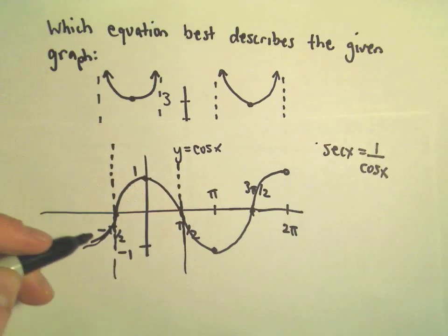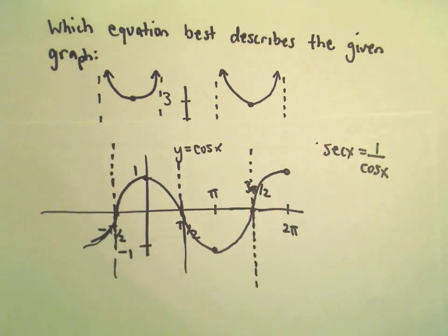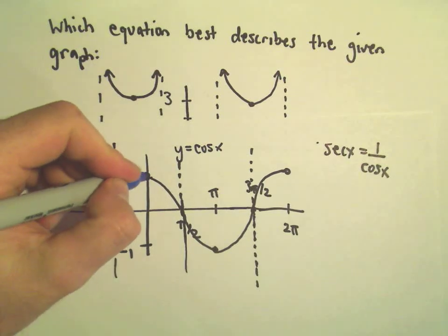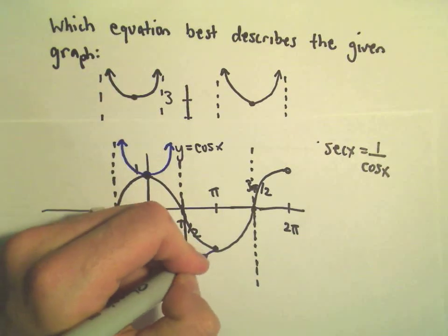So we're going to get asymptotes here at negative pi over 2, positive pi over 2, 3 pi over 2. And what we have to do, if you remember the graph, secant just kind of comes off the top of it and off the bottom of it.